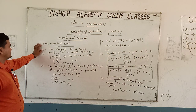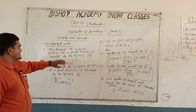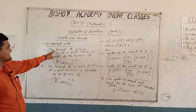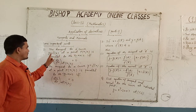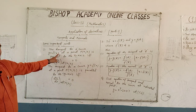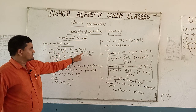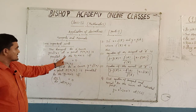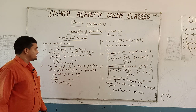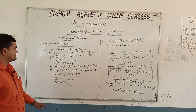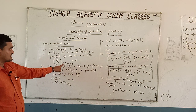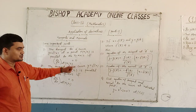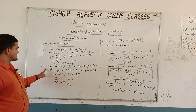Now students, some important points: First, the tangent to a curve y = f(x) at a point (x₁, y₁) is parallel to the x-axis if and only if dy/dx at (x₁, y₁) is equal to 0.